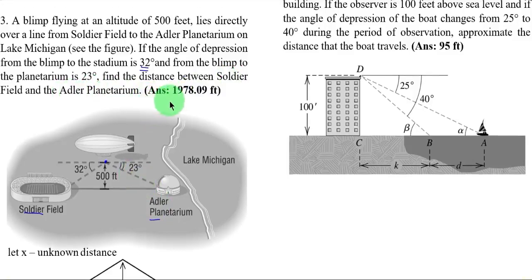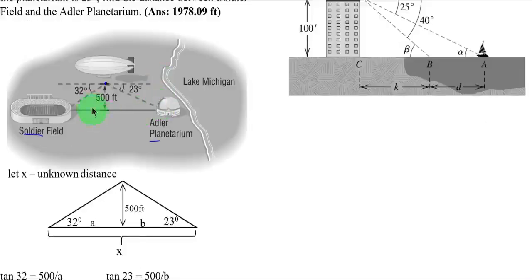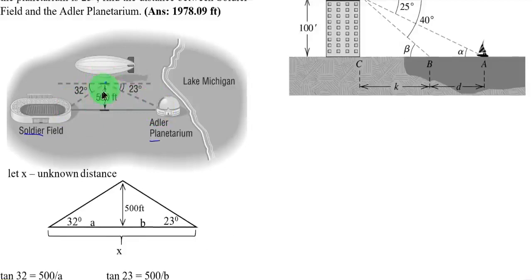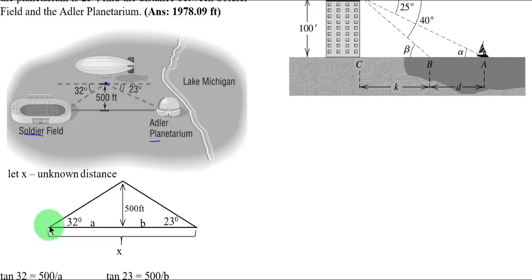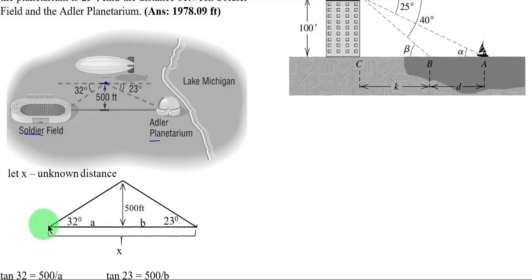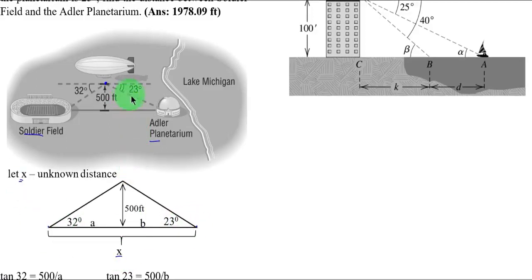So the answer here is 1,978.09 feet. Again, we can draw a triangle which represents the given situation. So this is your 500 feet, the altitude of the blimp, this is your Soldier Field location, and then your planetarium. So the unknown here is the distance between these two. So let us denote that as x. Now the given angle, if you take a look at here, we have 23 and we write 23 here.